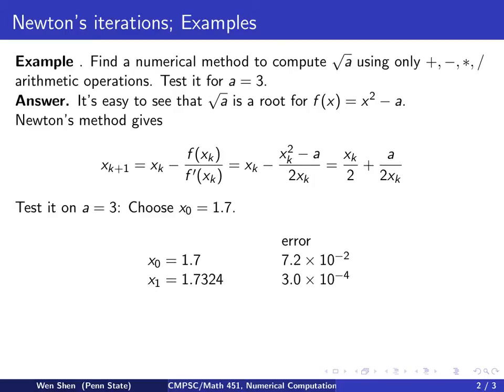And I run one iteration. I put x_0 to be 1.7 and computed x_1. It gives me 1.7324. And the error is about 3 times 10 to the negative 4. And I do one more iteration, and I get 1.7321, and then the error is now in the magnitude of 10 to the negative 8.